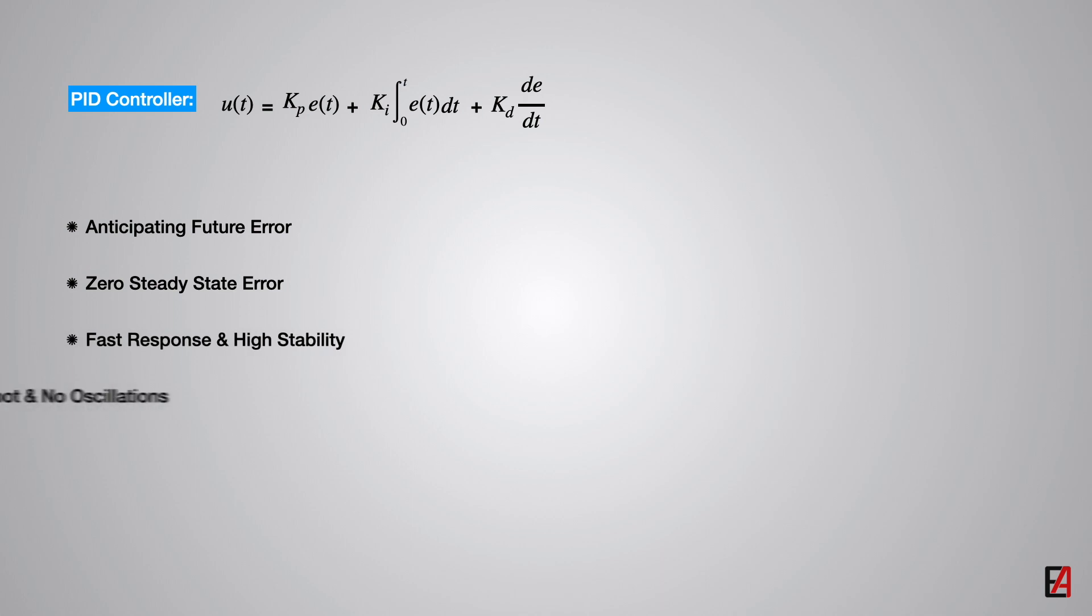Final is the PID controller. As the PI controller does not have the capability to predict the future behavior of the error, so it reacts normally once the setpoint is changed. Introducing the derivative controller overcomes this problem by anticipating the future behavior of the error. Its output depends on the rate of change of error with respect to time multiplied by the derivative gain.